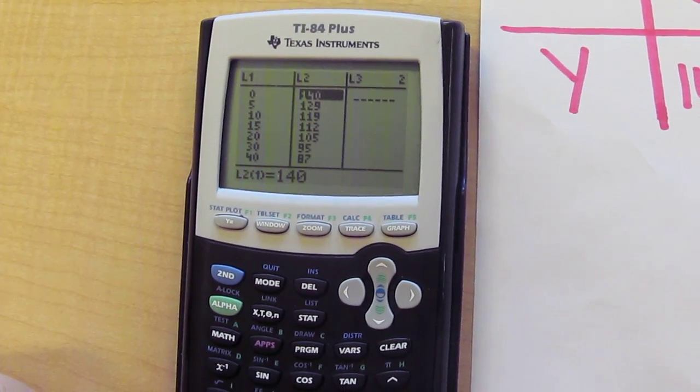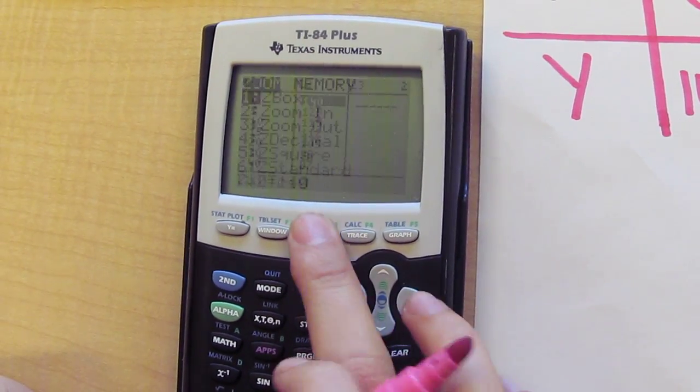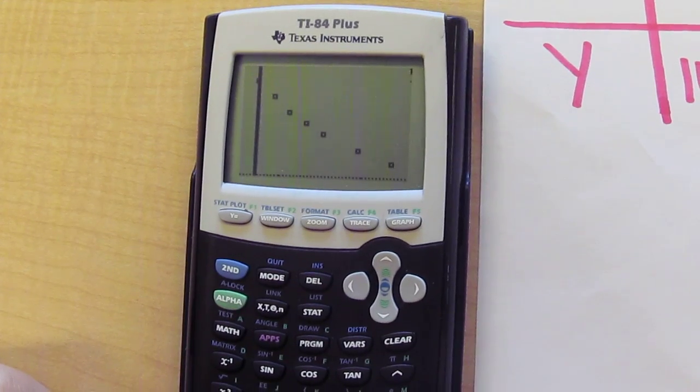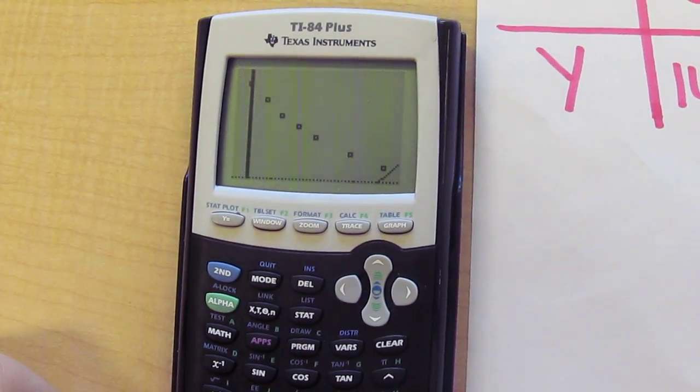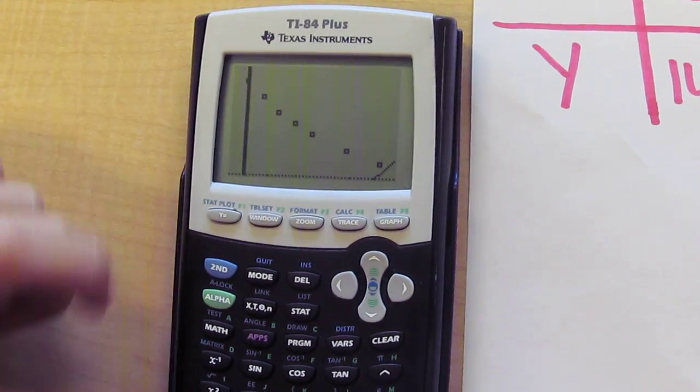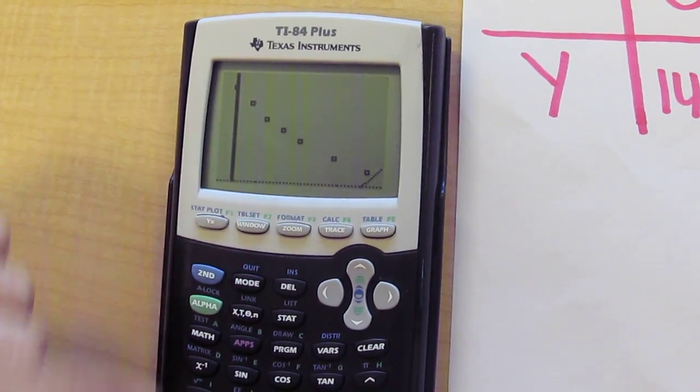And then press zoom, nine. And then you will see that it will either be a line or a curve. Mine is more of a line than it is a curve.